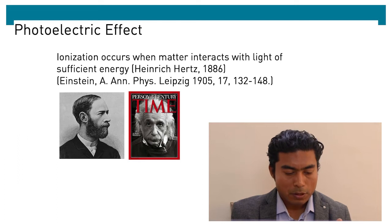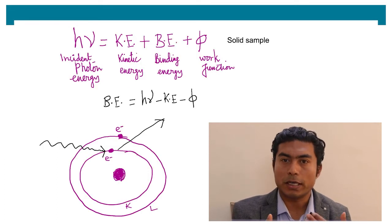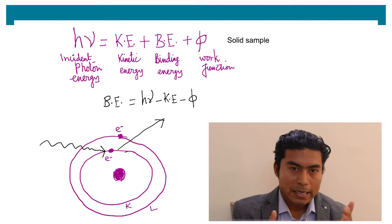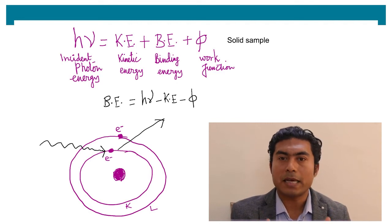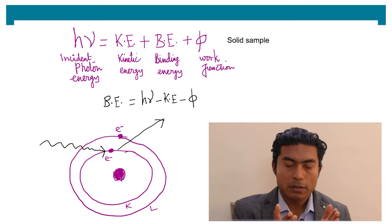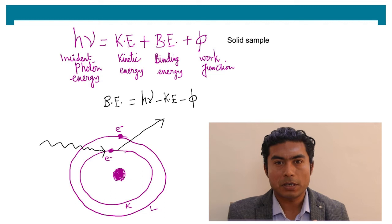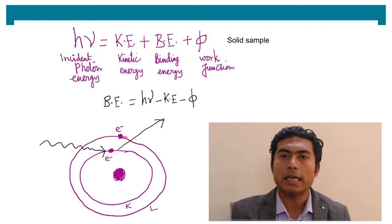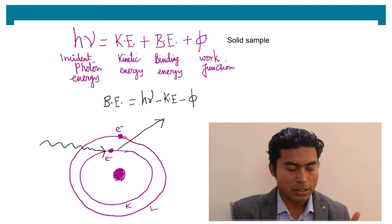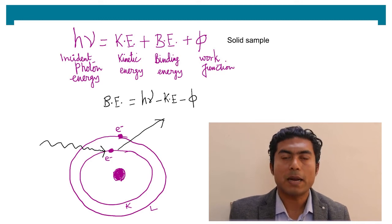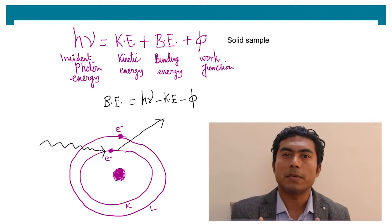The fundamental equation of photoelectron spectroscopy is that the binding energy of an electron plus its kinetic energy is equal to the incident photon energy. For a solid sample another parameter called work function is also added. So in this case, incident photon energy is equal to binding energy plus kinetic energy plus work function of the sample. By using a particular photon energy and by analyzing the kinetic energies of the photoelectrons we determine the binding energies.